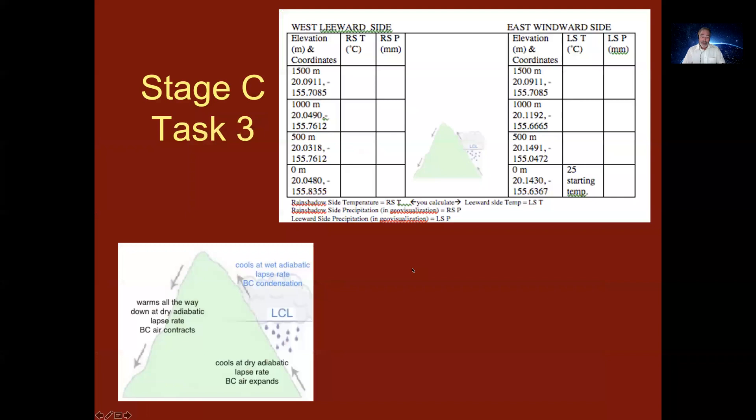So what this lab is having you do is to walk the air mass, not in the way in which you would read, but kind of from the way in which the air is approaching it if you're looking northward at a cross section of the Kohala volcano. You're going to be starting in the lower right, the east windward facing side.